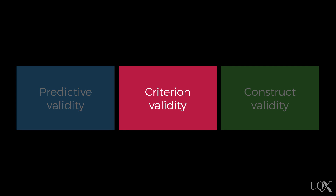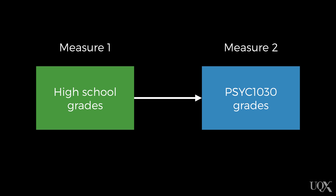Criterion validity is where we match the scores on the test with some other measure, either a previous measure or a concurrent measure of the same thing. For example, if we're interested to see whether or not your grades in this course are a valid measure of your academic performance, what we could do is compare your grades from this course with your grades from high school, because your performance at high school is another measure of your academic ability. Typically, a student's grades from high school have been taken over a number of years and assessed over a range of topics, so they should be a pretty good, stable measure of academic ability.